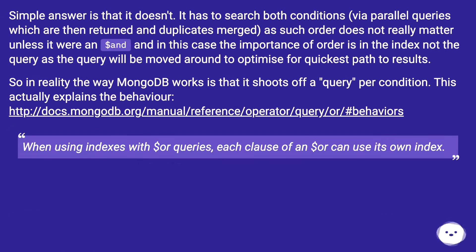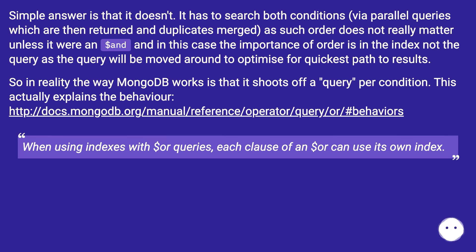As such, order does not really matter unless it were in dollar-and. In that case, the importance of order is in the index, not the query, as the query will be moved around to optimize for the quickest path to results. In reality, the way MongoDB works is that it shoots off a query per condition. When using indexes with dollar-or queries, each clause of a dollar-or can use its own index.